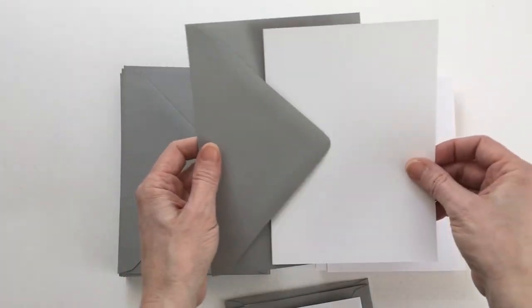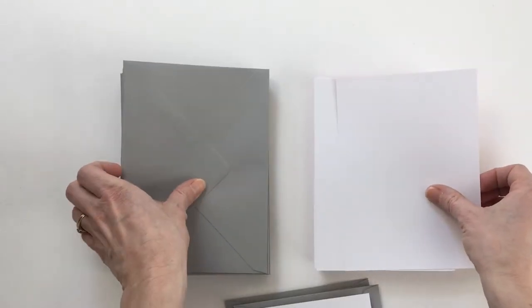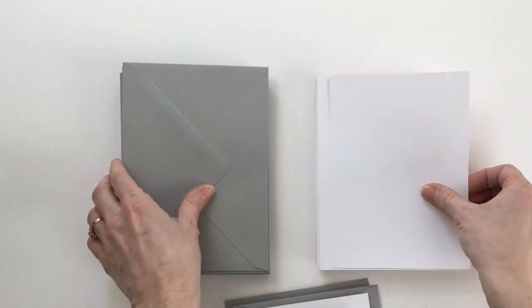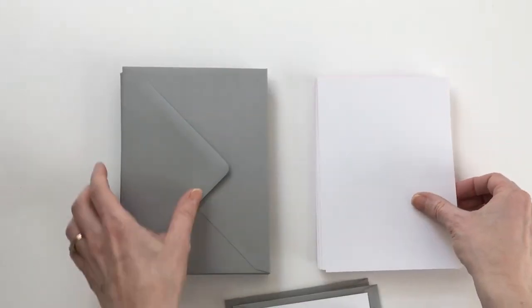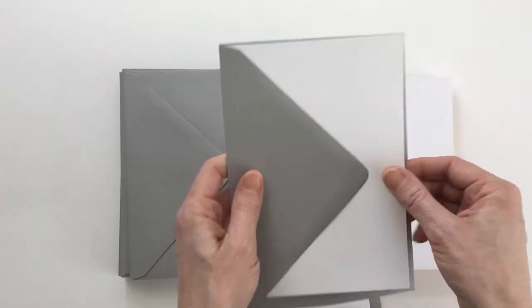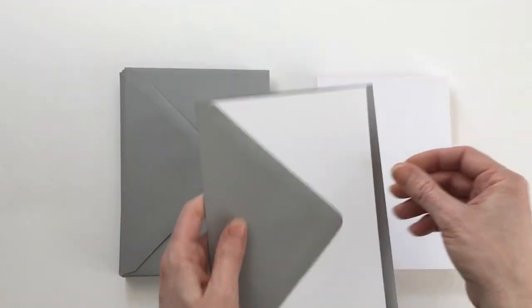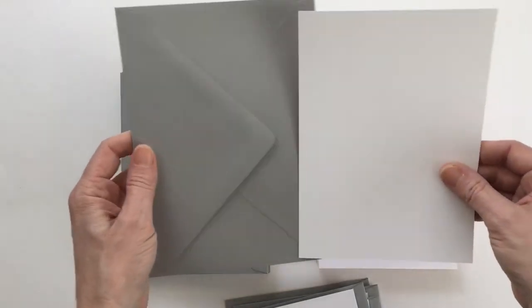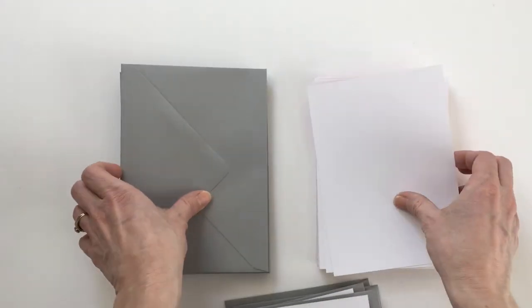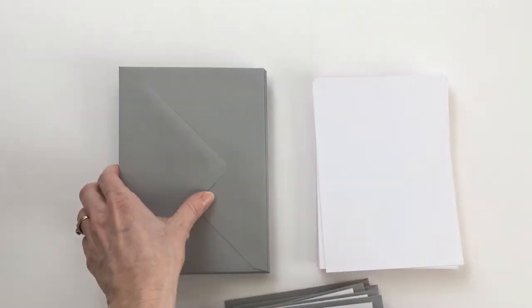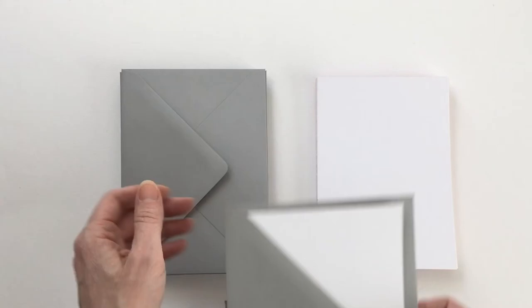For example, if I'm collating my RSVP card with its envelope, or if I do all of my stamping envelopes at the same time, if I do all of my envelope licking at the same time, or if I do all of my ribbon tying at the same time, this is going to go a whole lot faster than assembling your entire invitation suite from start to finish each time.